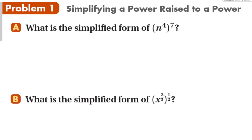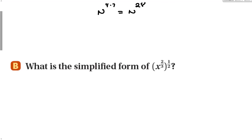What is the simplified form of n to the 4th to the 7th? This becomes n to the 4 times 7, which is n to the 28th power. It also works with fractions: x to the 2-thirds to the 1-half becomes x to the 2-thirds times 1-half, which is x to the 2-sixths. Of course, we never leave a fraction unsimplified, so that would be x to the 1-third power, dividing both by 2.